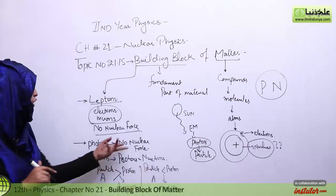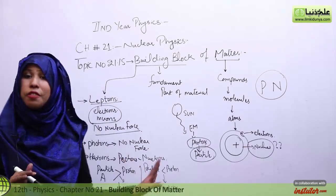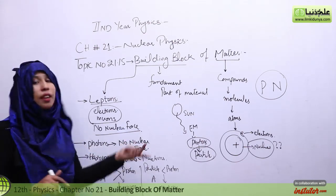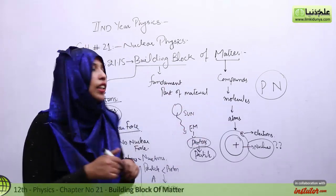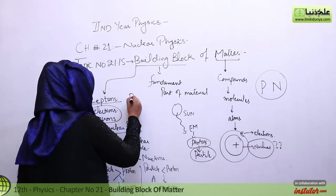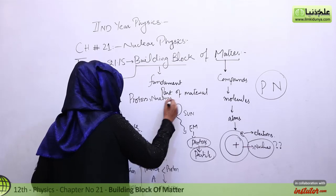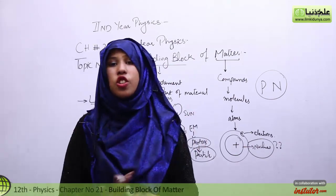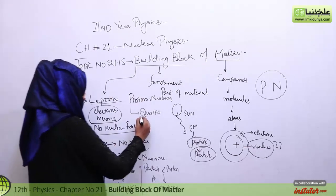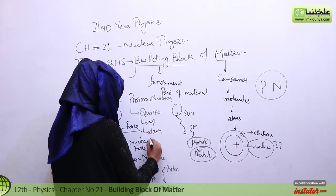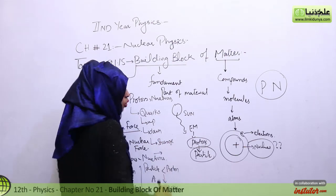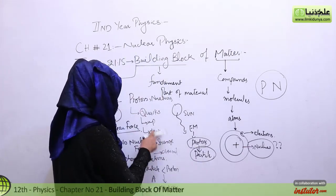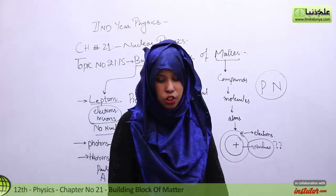Now the question is: are protons and neutrons fundamental particles? Still no. These are not fundamental particles. Now we have only two fundamental particles so far — leptons and photons. When we open the structure of protons and neutrons, we find they are made of a new particle called quarks. Quarks are our fundamental particle because their internal structure has not been discovered. Quarks basically have six types: up quarks, down quarks, strange quarks, charm quarks, top, and bottom.